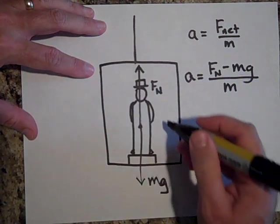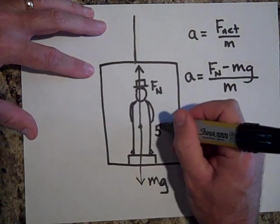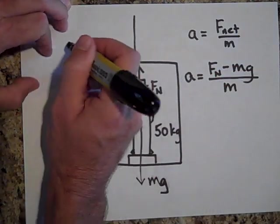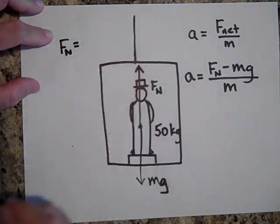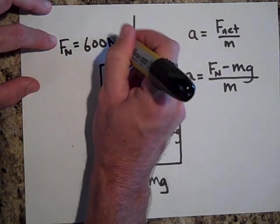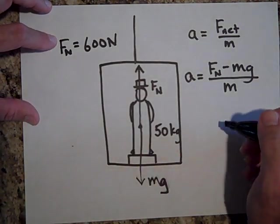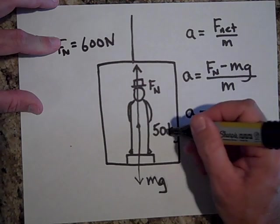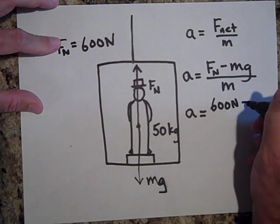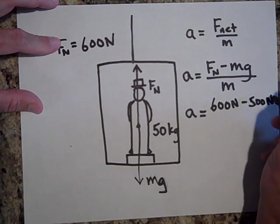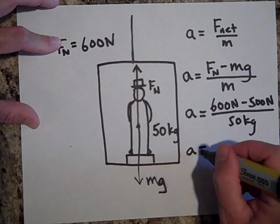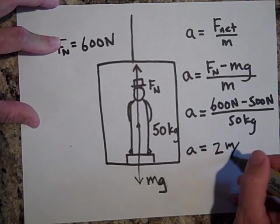Let's put in some numbers. Let's say this person is 50 kilograms and the normal force, the scale reading, is reading 600 newtons. Then let's see what the acceleration would be. a equals, now the downward force is 500 newtons and the upward force is 600 newtons, so we got 600 newtons minus 500 newtons all over 50 kilograms.